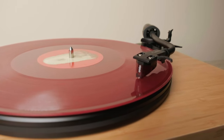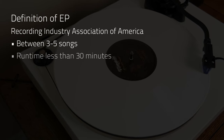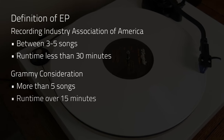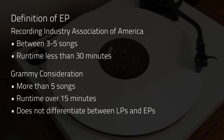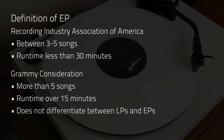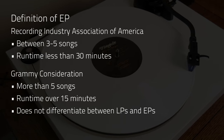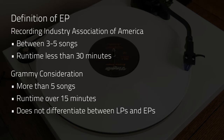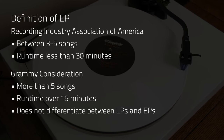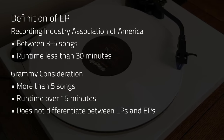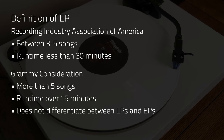For sales purposes, the Recording Industry Association of America says between 3 to 5 songs and a runtime under 30 minutes is an EP. But for Grammy Awards, an album must have 5 or more songs and a runtime over 15 minutes, and they do not differentiate between LPs and EPs.